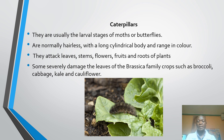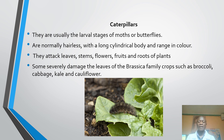Crops of the brassica family such as broccoli, cabbage, kale and cauliflower are attacked by green caterpillars of the large cabbage white butterfly and the small diamond back moth. Cluster caterpillars, woolly bear caterpillars and looper caterpillars attack the leaves of most vegetables, therefore causing harm to the vegetable crop.